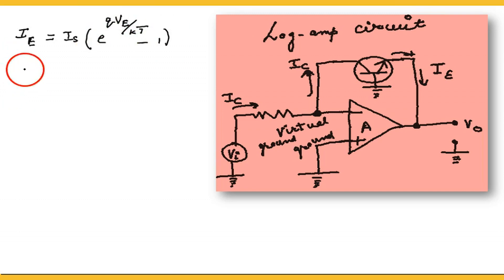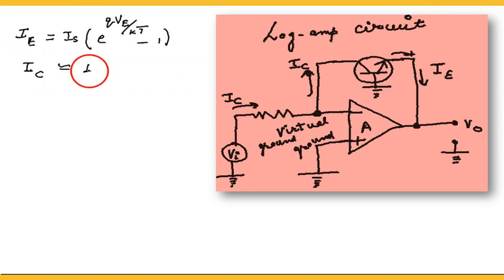Now IE and IC are approximately equal. Moreover, e raised to the power (q·VE / kT) is very much greater than one, so the minus one term is neglected as compared to e raised to the power q·VE / kT. So the minus one is neglected here.